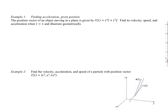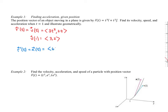In example 1, we find velocity, speed, and acceleration given position, then illustrate geometrically. The position of an object moving in a plane is given by r of t; we find these at time t equals 1. The velocity r prime of t equals <3t², 2t>, so at t=1 that's <3, 2>. The acceleration r double prime equals <6t, 2>, so at t=1 that's <6, 2>. The speed is the magnitude of velocity at t=1: the square root of 3 squared plus 2 squared, which equals the square root of 13.